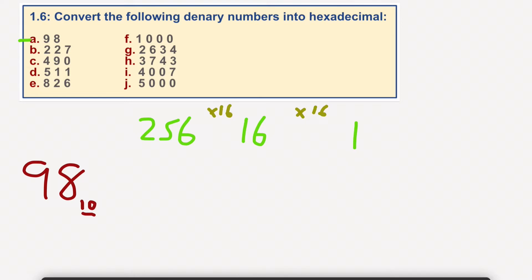So first of all, obviously 256 doesn't go into 98, but 16 does. But how many times does 16 go into 98? 98 divided by 16. Well, 6 times 16 would equal 96. So I can put a 6 in here, and how many is left over? There's 2.